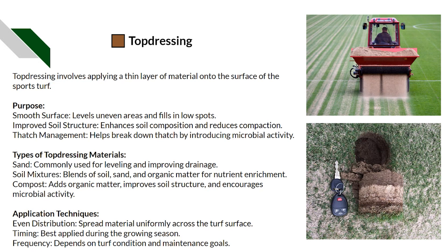Materials we can use include sand, soil mixes, and compost. Most sports pitches use a 70/30 mix, though it depends on the specification of the facility. For application, to achieve even distribution we want to use a top dresser or push spreader rather than doing it by hand, as we won't achieve the same uniformity. We can go over it afterwards with a brush to scrub it in evenly.